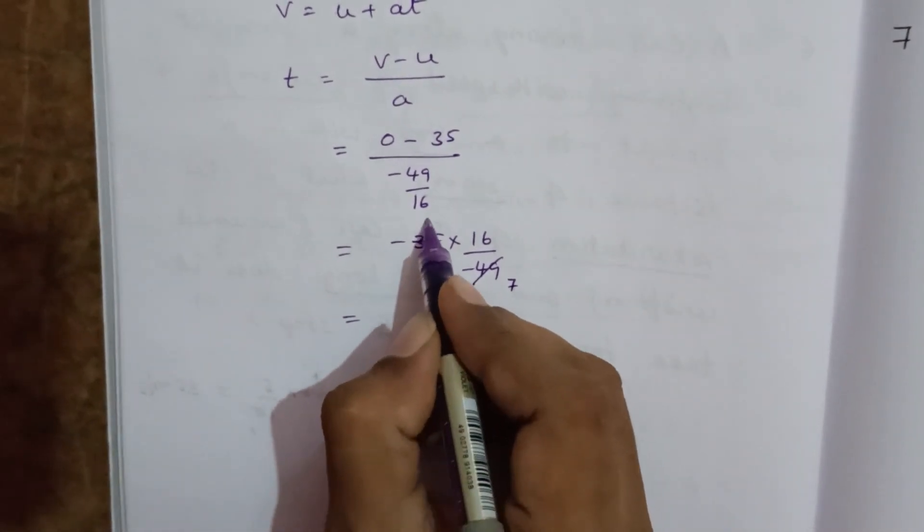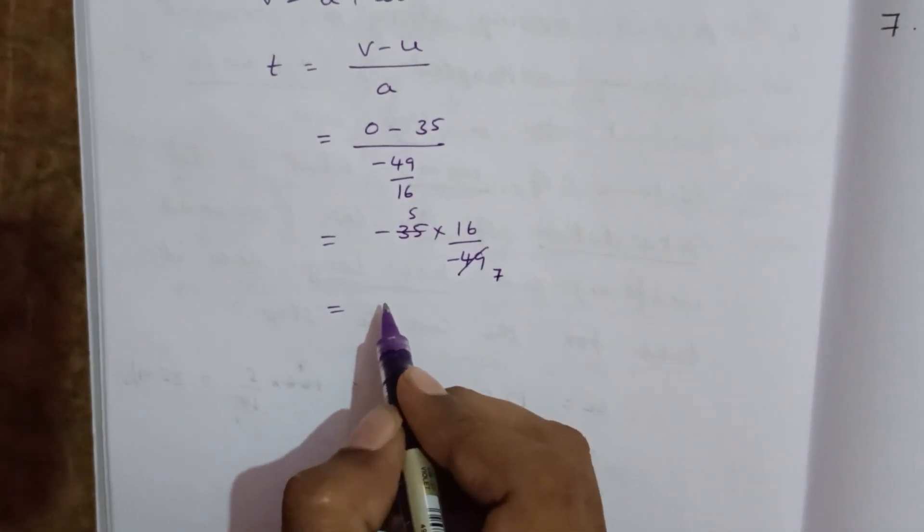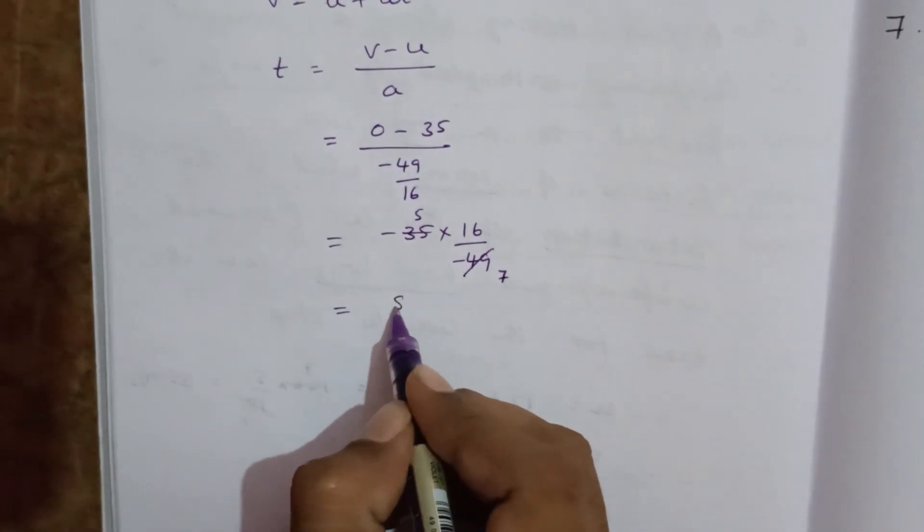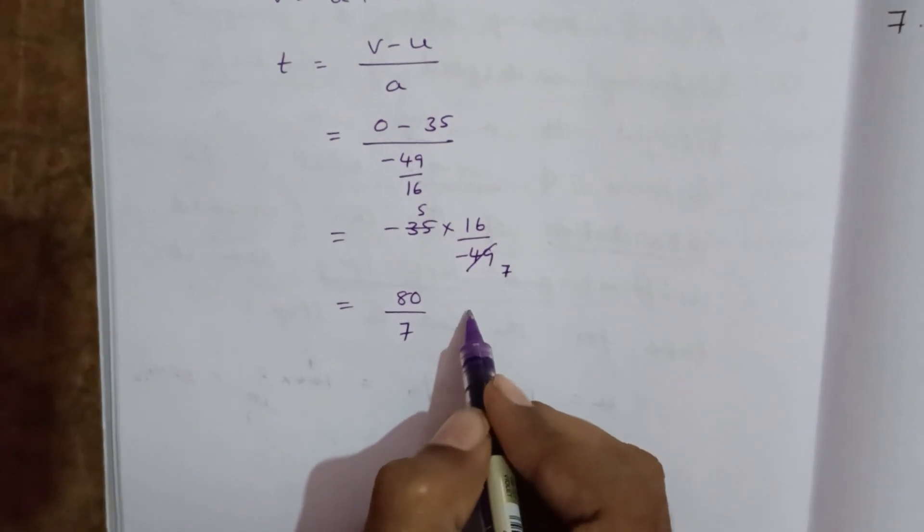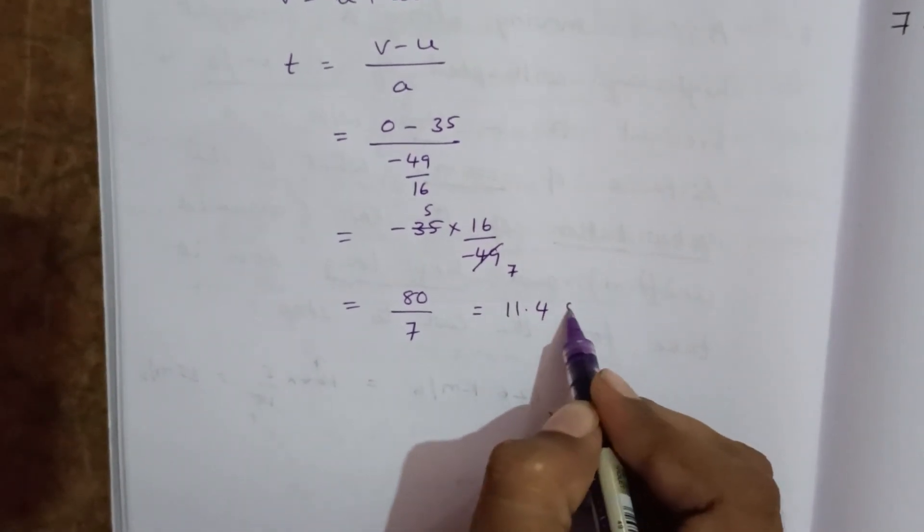Seven times five. Then it is 5 into 16, 80 divided by 7. That is equal to 11.4 seconds.